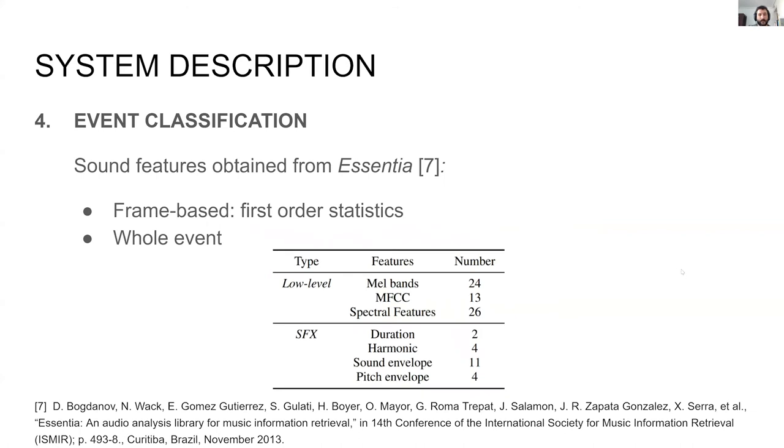Some features are obtained using the library Essentia. We have used both low-level features such as mel bands, MFCCs, and spectral features, and more abstract dimensions, such as harmonics and envelopes. Some of the features are applied to the whole audio signal, while others are frame-based. In the later case, we use the mean and variance across time.